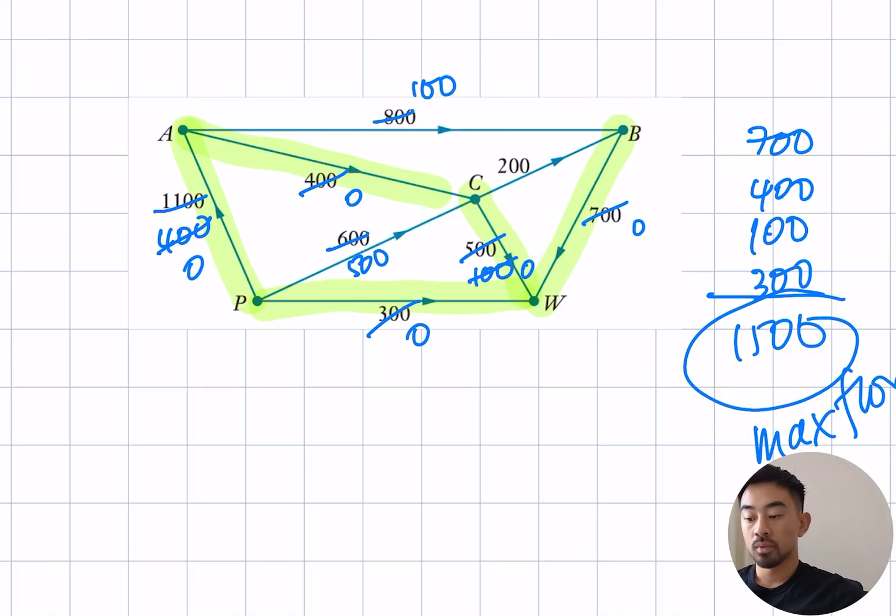So that's how to find maximum flow of a network. If you have any questions let me know in the comments below. Give me a like. Otherwise I'll see you in the next one. Peace.